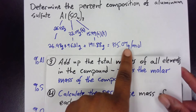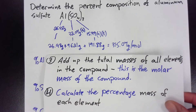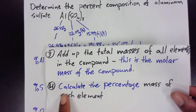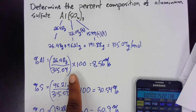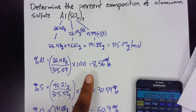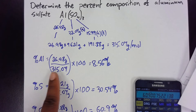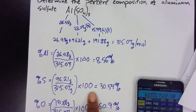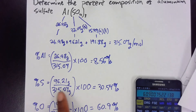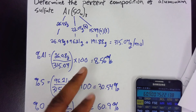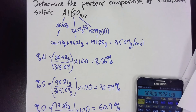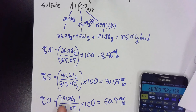The molar mass came out to 315.07 grams per mole. Then the last step: we calculated the percentage mass by taking the total mass of each element divided by the molar mass times 100. Percent aluminum: 26.98 over 315 times 100 = 8.56%. Percent sulfur: 96.21 divided by 315 times 100 = 30.54%. And finally oxygen: 100 minus those two gives 60.9%, which can also be calculated as mass of oxygen divided by the total, times 100.